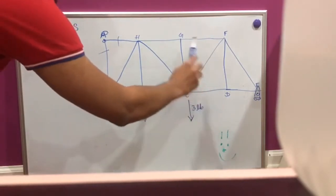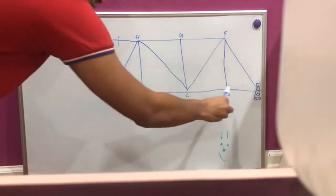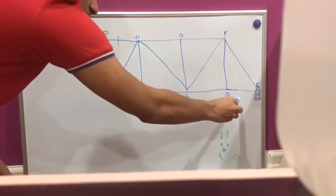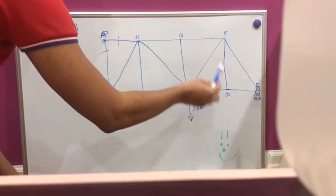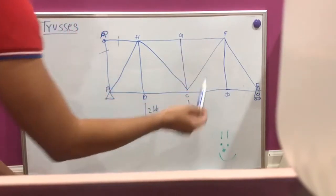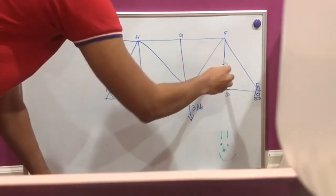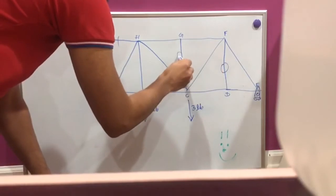Now point D and point G are unloaded. There are three members, two of them are collinear, the third one is non-collinear. Same thing with G. So in that case, this will be a zero force member, and this will be a zero force member.